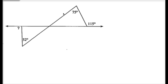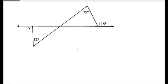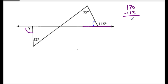In the next example, we're looking for the exterior angle of a triangle. My first step: this is a straight angle, so it's supplementary — 180 minus 115 gives me 65. So this angle here is 65 degrees.